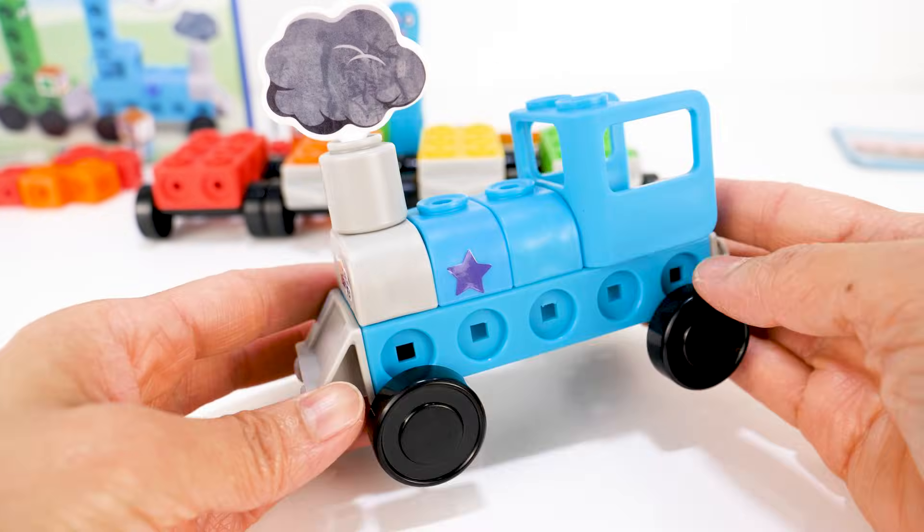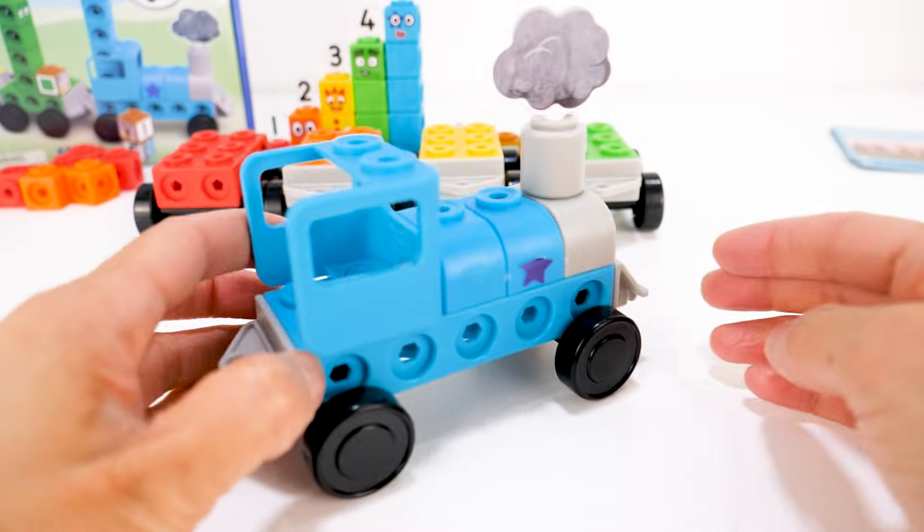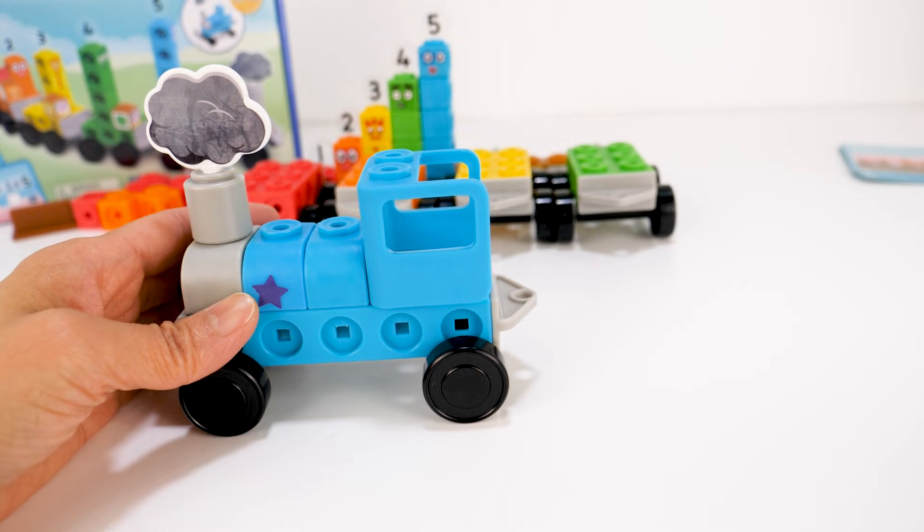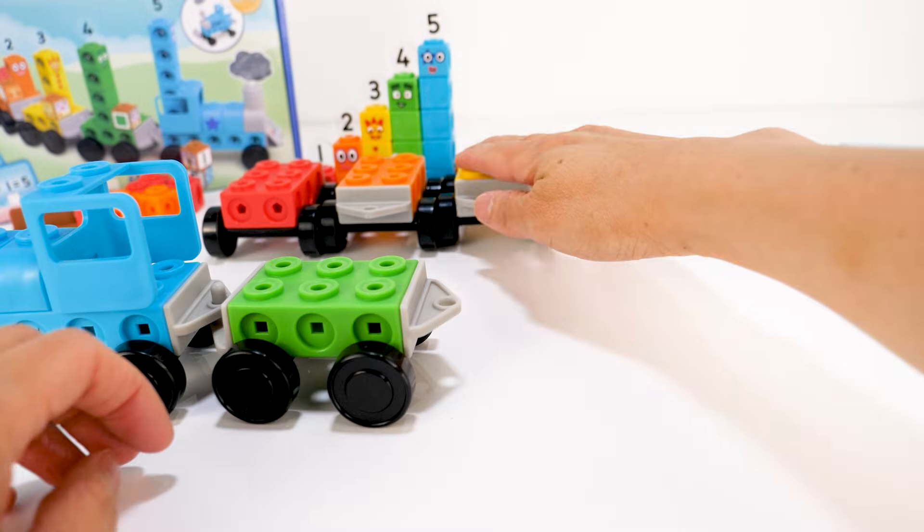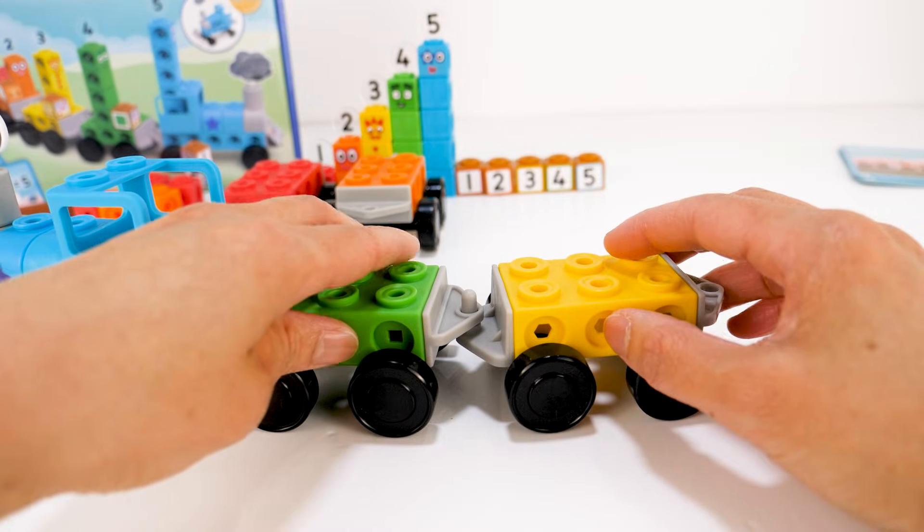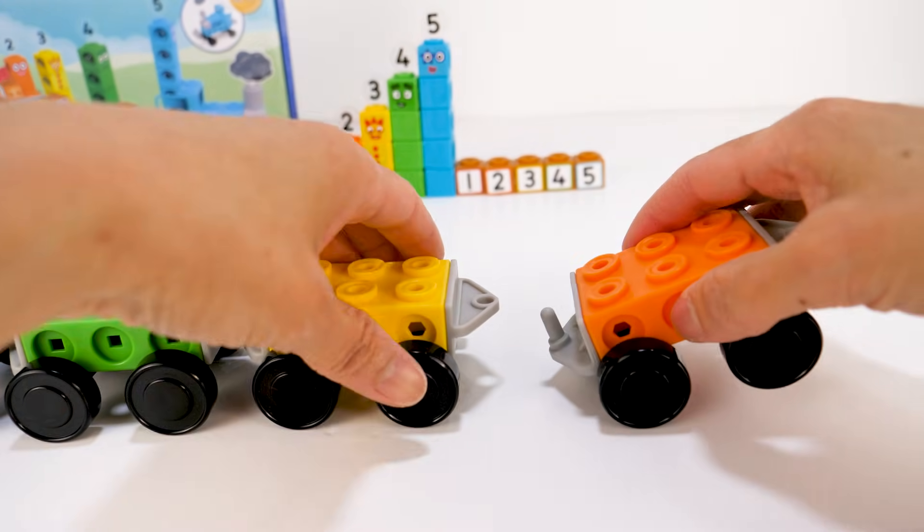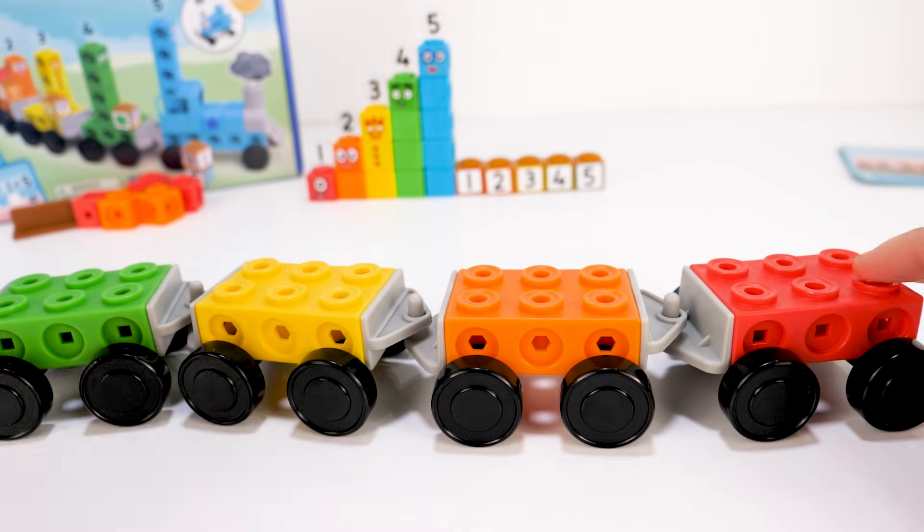Now that we have built all the pieces for the train, it's time to connect them. Starting with the engine, then the green car, next is the yellow car, then the orange car, and finally the red car.